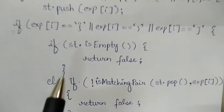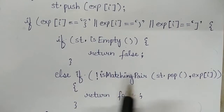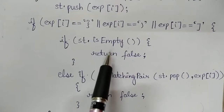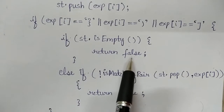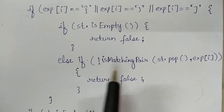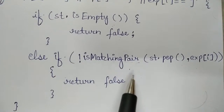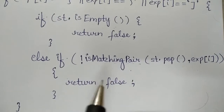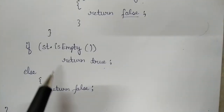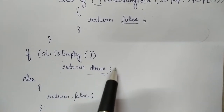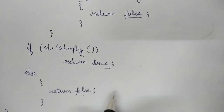When a closing parenthesis is encountered, there are two conditions to check. Either the stack will be empty, or it will not have the matching pair. Whenever the stack is empty it means there is no opening parenthesis, so it will return false, meaning it is not a balanced expression. For the matching pair condition, we use a matching pair function which checks whether the closing parenthesis has a corresponding opening parenthesis. If it doesn't, it returns false. Coming out of the loop, if the stack is empty it returns true, meaning it is a balanced parenthesis expression; otherwise it returns false.